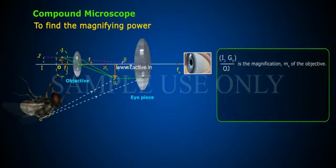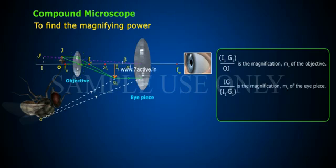I₁G₁/OJ is the magnification M₀ of the objective. IG/I₁G₁ is the magnification Mₑ of the eyepiece. M = M₀ × Mₑ (Equation 1).